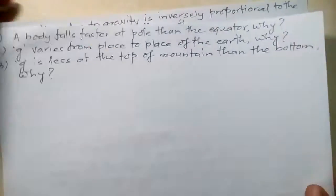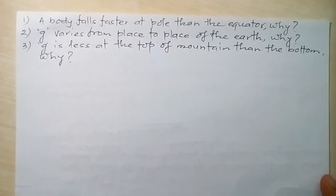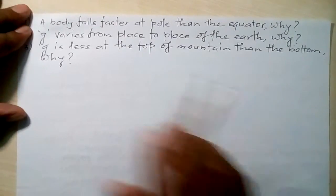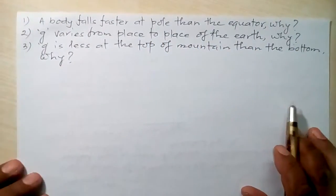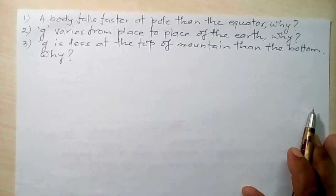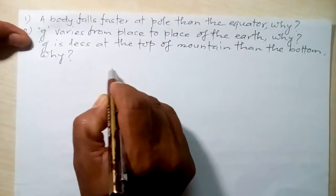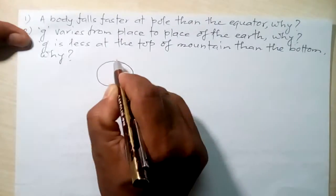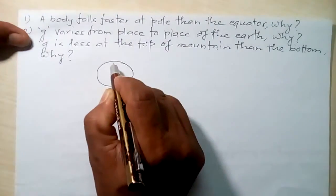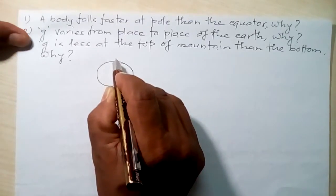Now let's look at questions related to the relation between g and the radius of the Earth. Question one: a body falls faster at the pole than at the equator — why? This question is related to acceleration due to gravity and the radius of the Earth. We all know that the Earth is flattened at the poles and bulges at the equator.